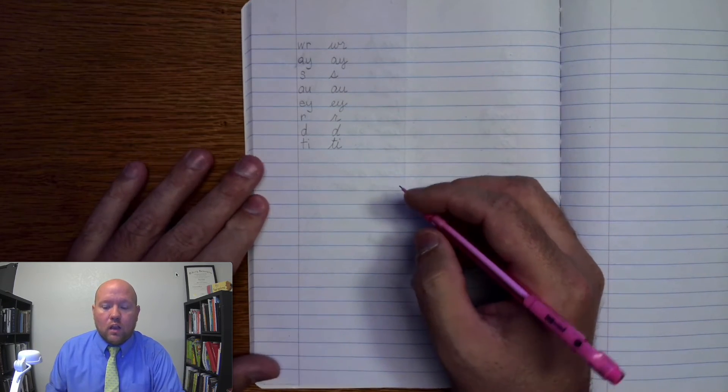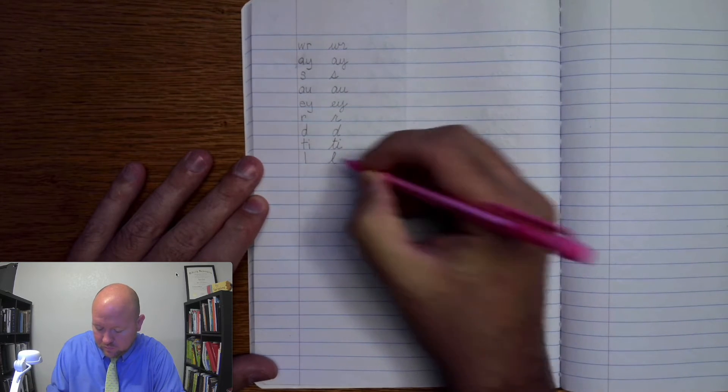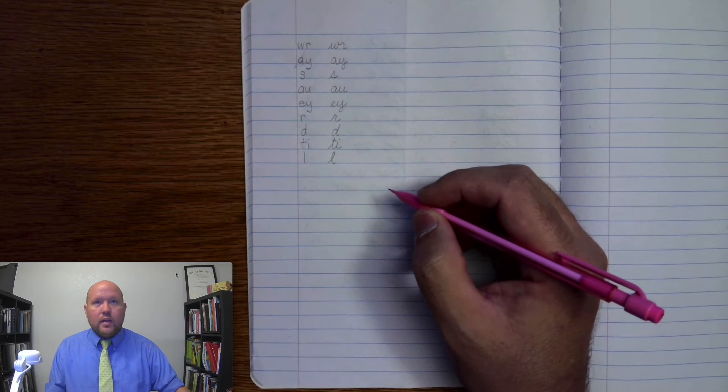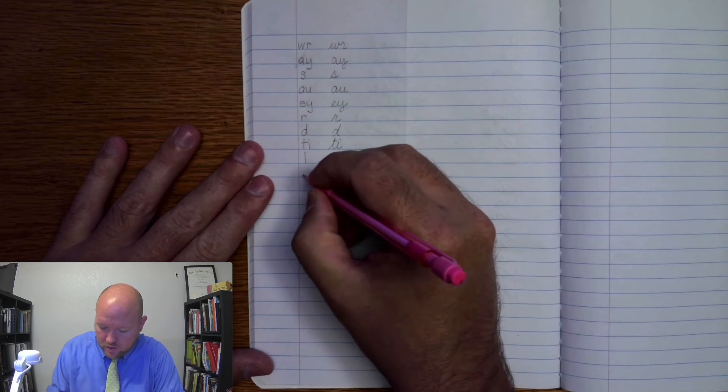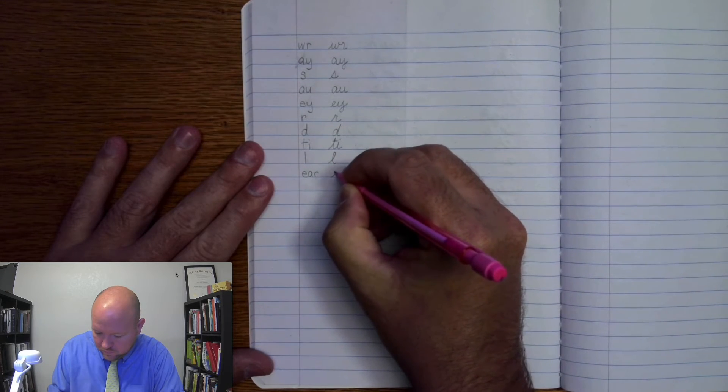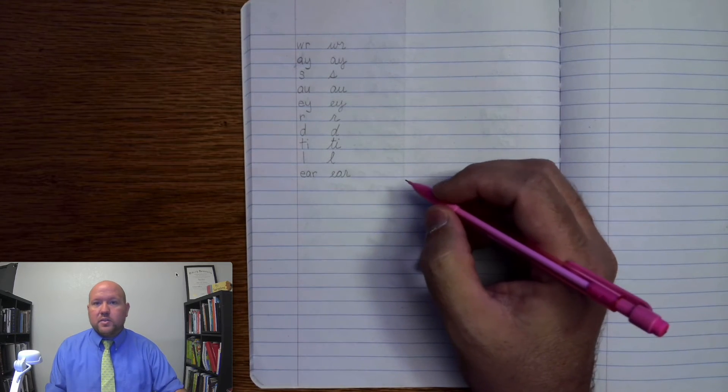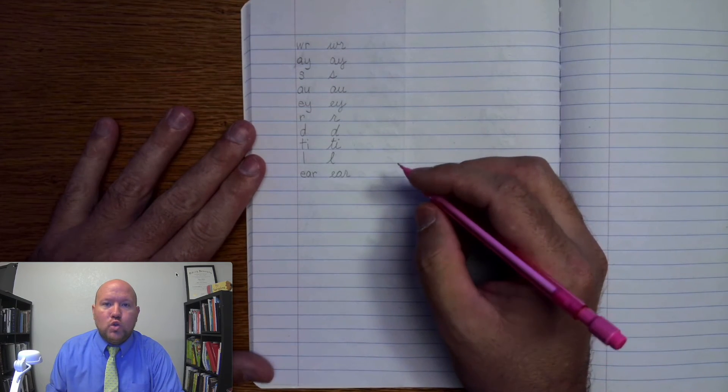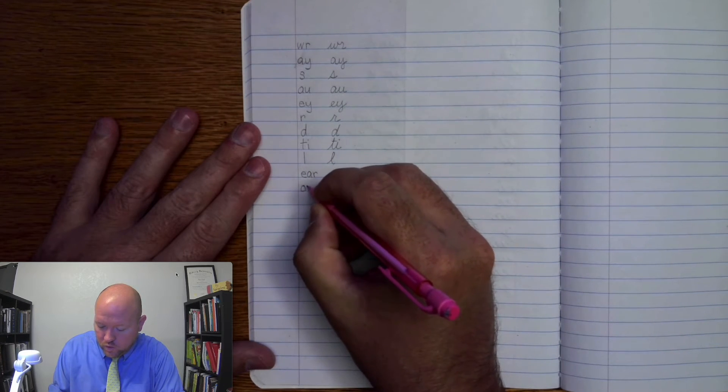Next one, ll, ll. Next one, ur, early, er, early. Next one, ow, ow, oo, uh, ow, ow, oo, uh.